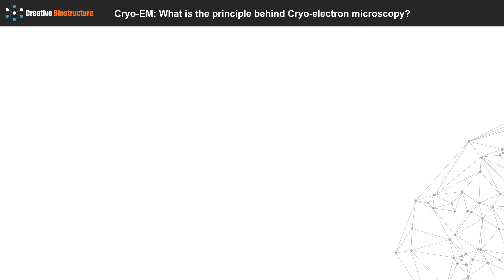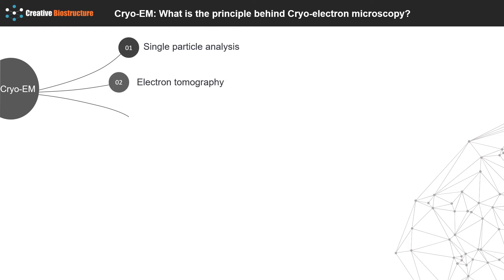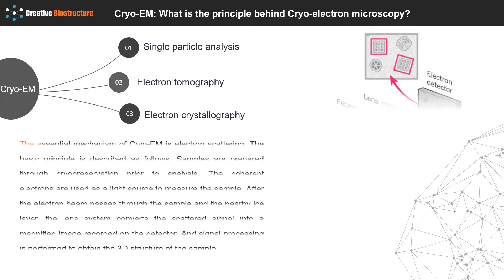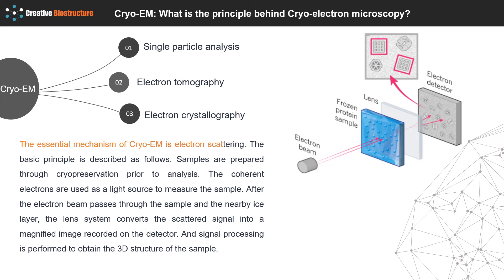What is the principle behind cryo-electron microscopy? Cryo-EM includes three different methods: single-particle analysis, electron tomography, and electron crystallography. We focus on the first method here. The essential mechanism of cryo-EM is electron scattering. Samples are prepared through cryo-preservation prior to analysis. Coherent electrons are used as a light source to measure the sample. After the electron beam passes through the sample and the nearby ice layer, the lens system converts the scattered signal into a magnified image recorded on the detector, and signal processing is performed to obtain the three-dimensional structure of the sample.